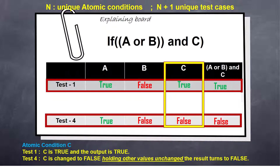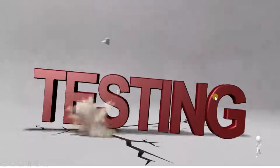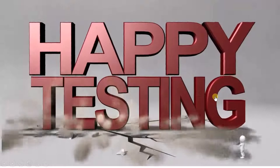So what we have learnt finally: if there are 3 atomic conditions, there will be 4 unique test cases. That is it from this topic. I will see you with the next topic — until then, happy testing.